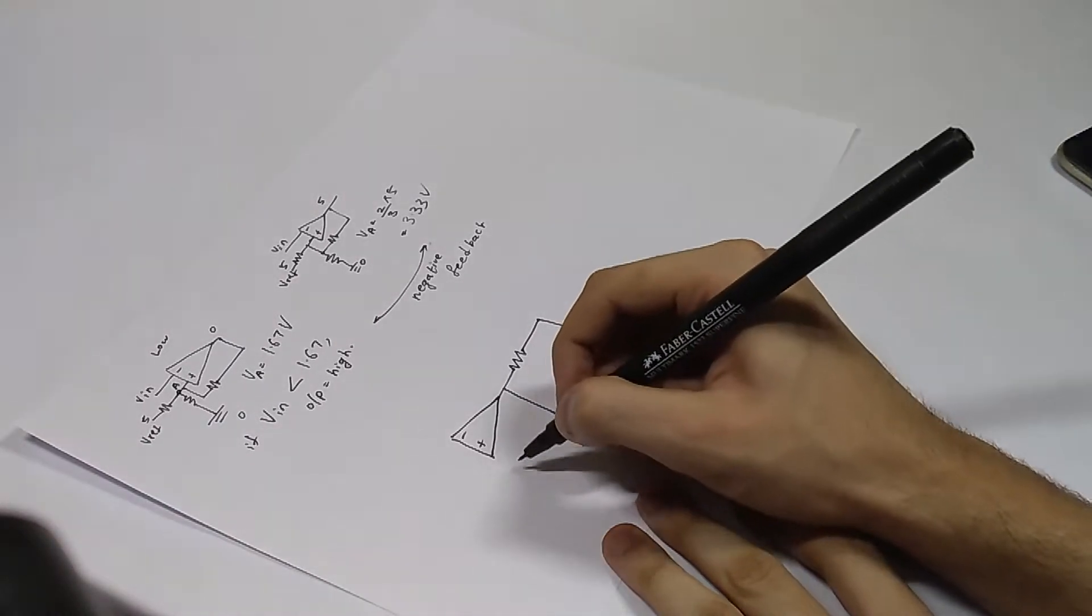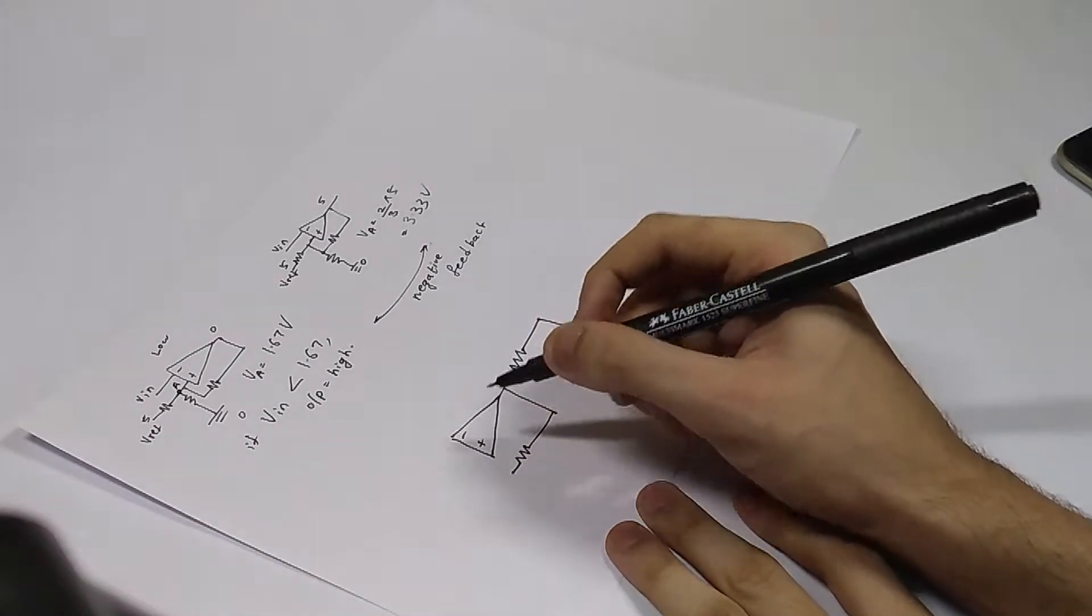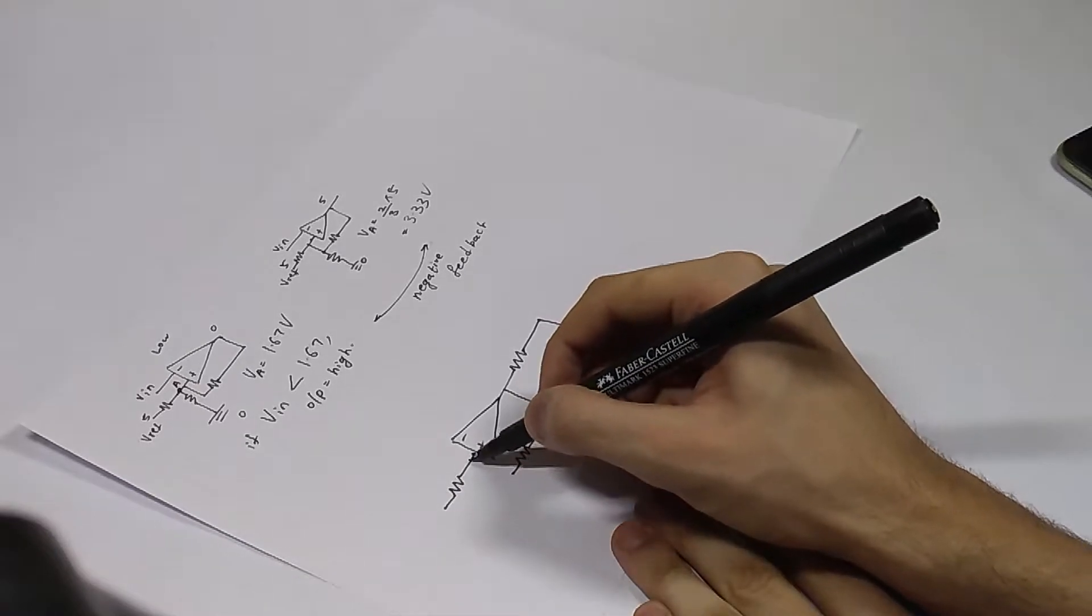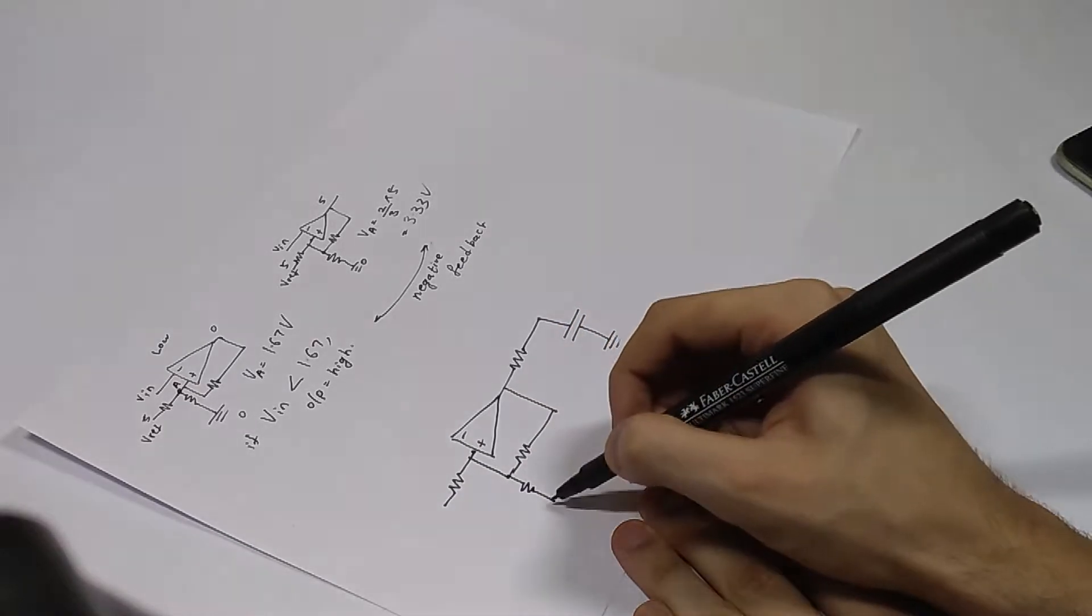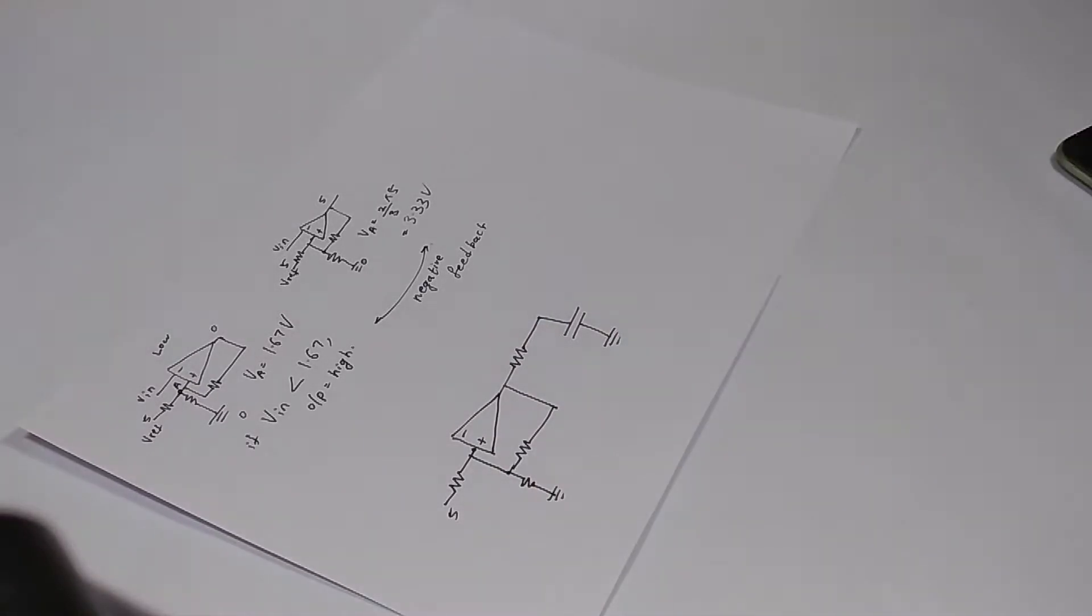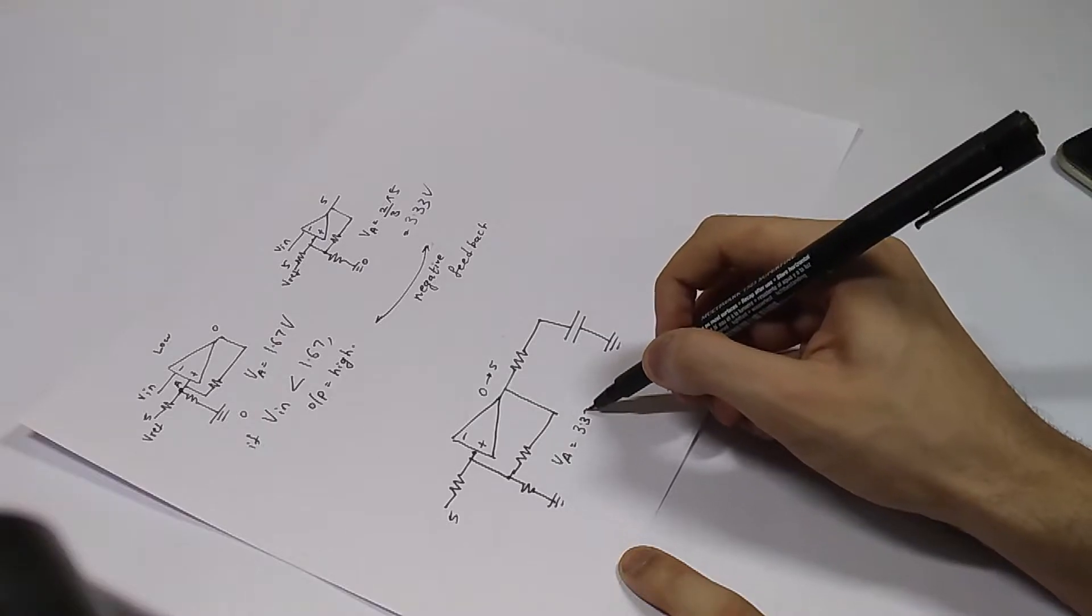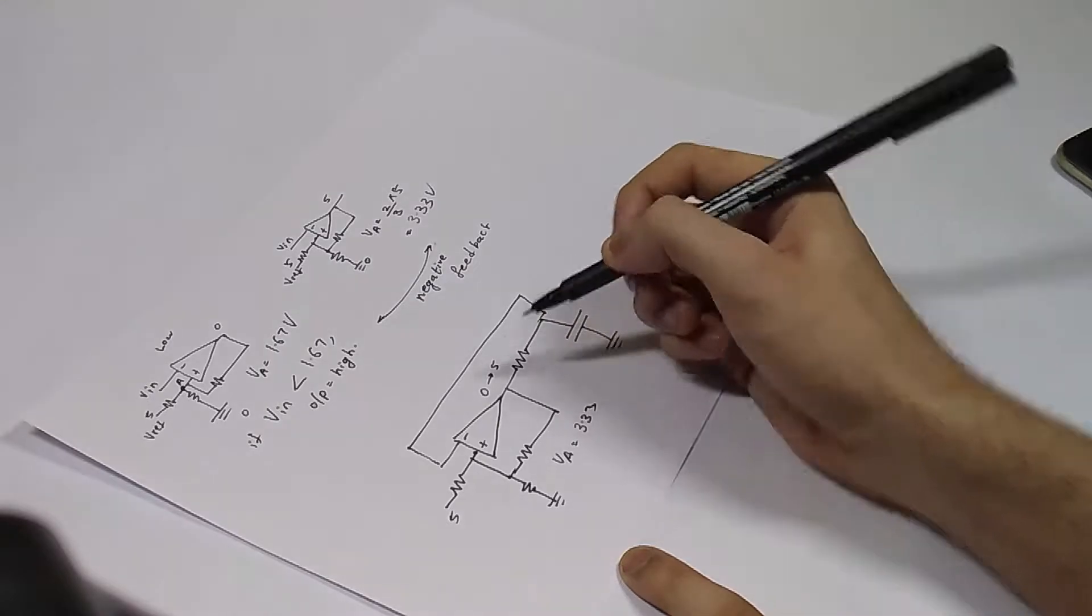A small modification that I did here was to add an RC circuit which would be responsible for timing of this oscillator. Here, the intermediate point of the resistance and the capacitance was connected to the inverting input of the operational amplifier.